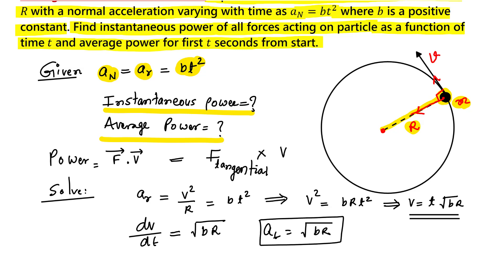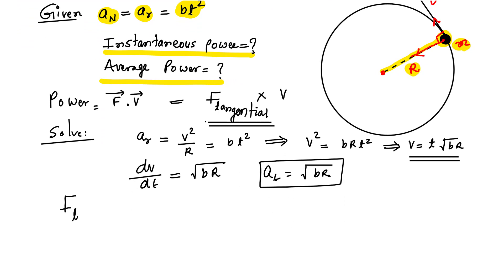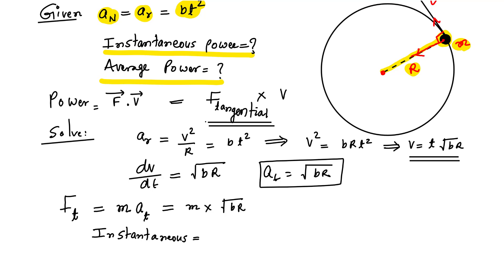Now I can calculate the force in the tangential direction. Force equals mass times acceleration, so tangential force equals m times the square root of br. Instantaneous power is tangential force times velocity: m times square root of br, times t times square root of br. This simplifies to instantaneous power equals mbrt.